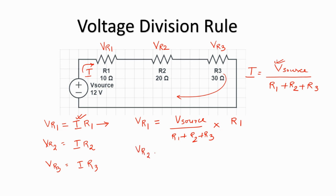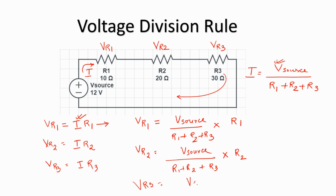Similarly, we get Vr2 as V source divided by R1 plus R2 plus R3, into R2. And Vr3 is given as V source divided by R1 plus R2 plus R3, into R3.